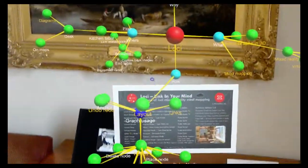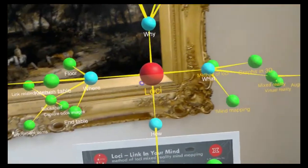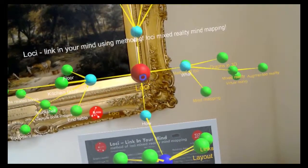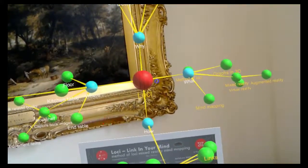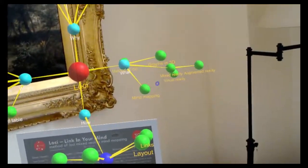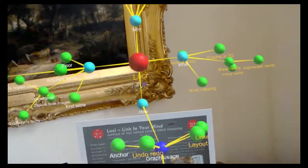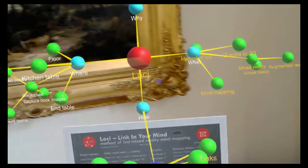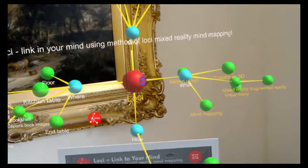So here you see an example that's loaded. And one of the first things you do with Loci, obviously, in the method of Loci is put things in areas that are relevant to you. And this mind map has a bunch of nodes and links, and we're going to move some of those around the locations that are relevant to us.